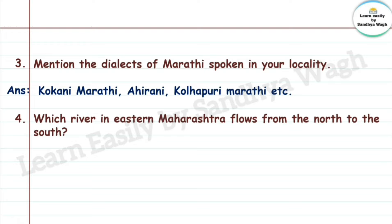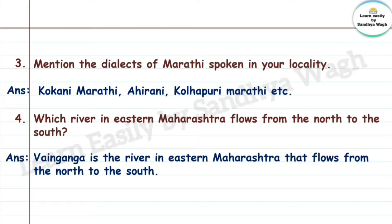Question 4: Which river in eastern Maharashtra flows from the north to the south? Answer: The Wardha river in eastern Maharashtra flows from the north to the south.